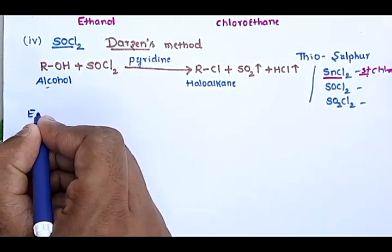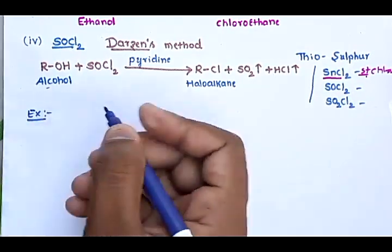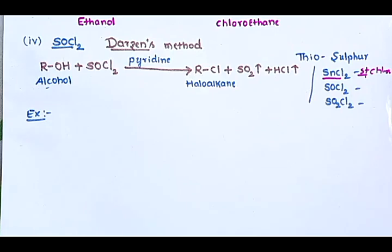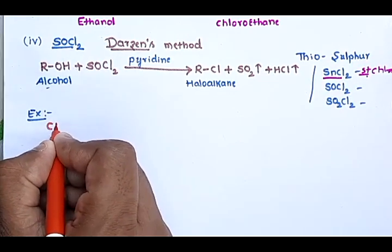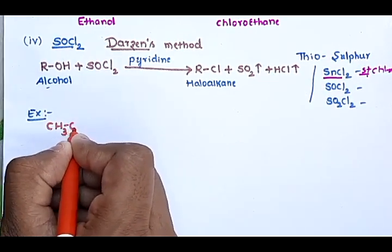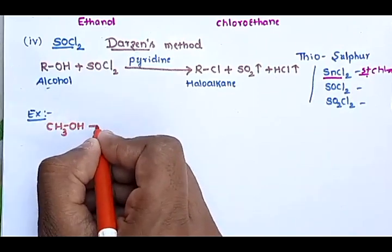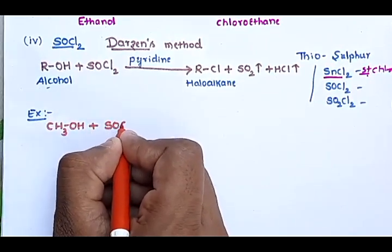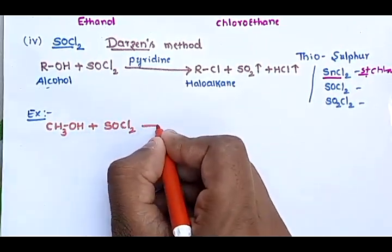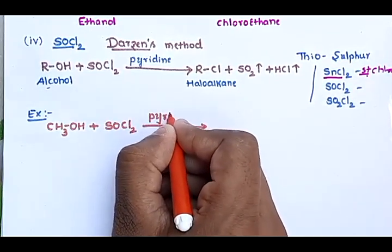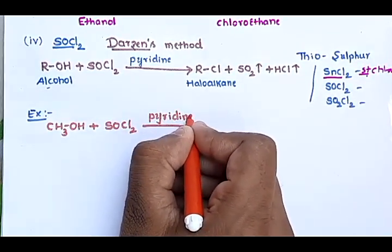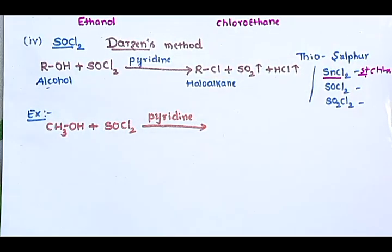For example, taking methanol CH₃OH reacted with SOCl₂ in the presence of pyridine gives CH₃Cl plus SO₂ (gas) plus HCl (gas). Starting with methanol gives chloromethane; starting with ethanol gives chloroethane; starting with propanol gives chloropropane.